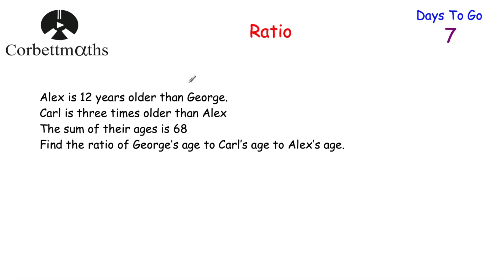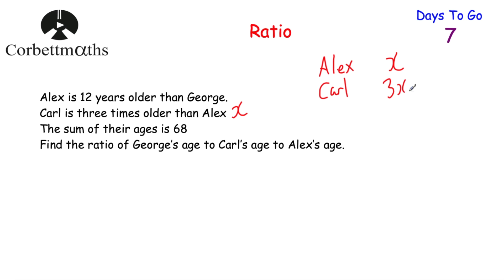Our next question: Alex is 12 years older than George, and Carl is 3 times older than Alex. The sum of their ages is 68. Find the ratio of George's age to Carl's age to Alex's age. I'll let Alex equal x years old. Carl is 3 times Alex's age, so Carl is 3x. Alex is 12 years older than George, so George is x minus 12. You could alternatively let George equal x, giving Alex as x plus 12 and Carl as 3x plus 36.